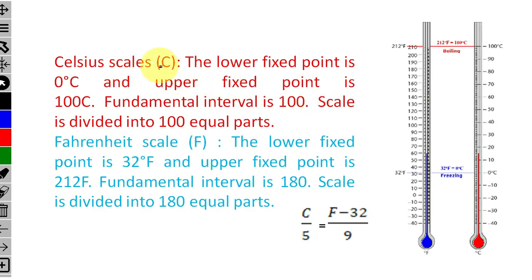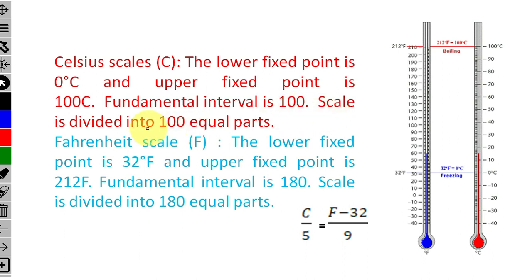First, the Celsius scale. The lower fixed point is 0 degrees Celsius and the upper fixed point is 100 degrees Celsius. The fundamental interval is 100, and the scale is divided into 100 equal parts. This is the Celsius thermometer.